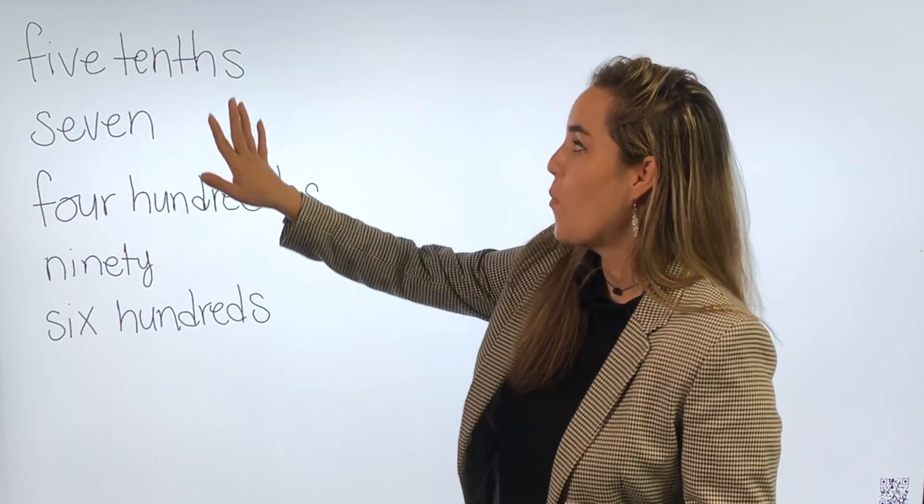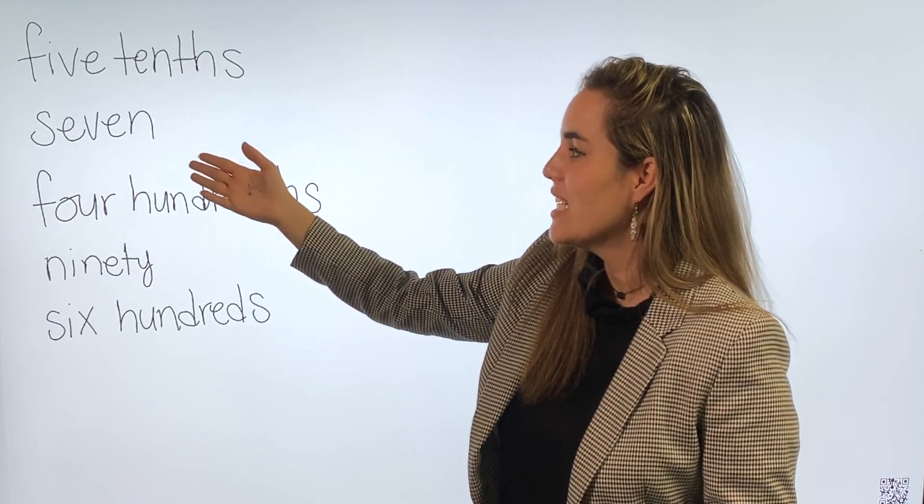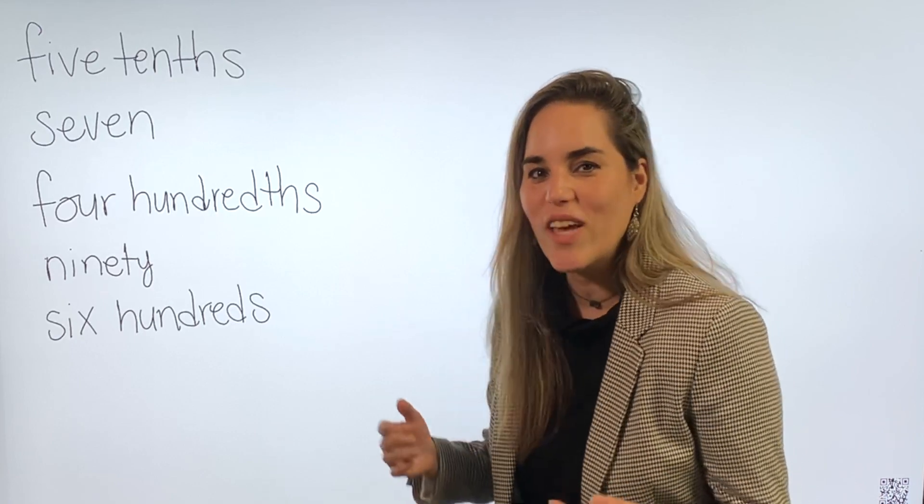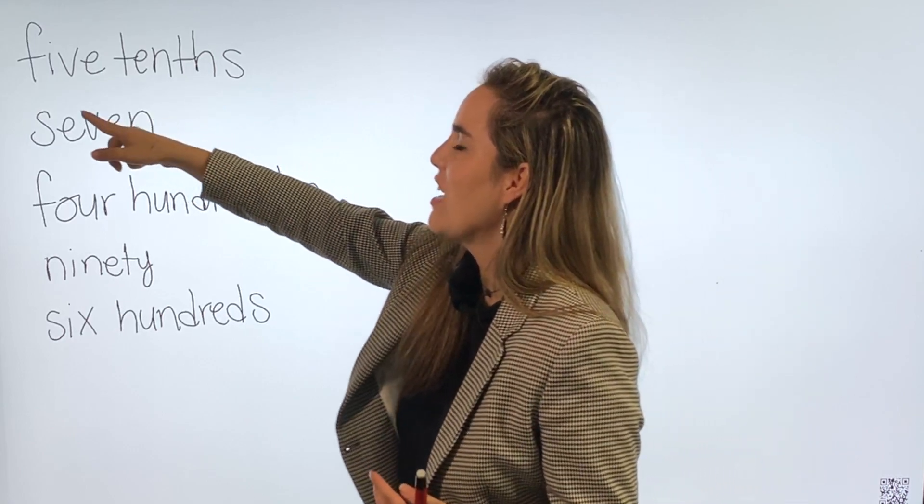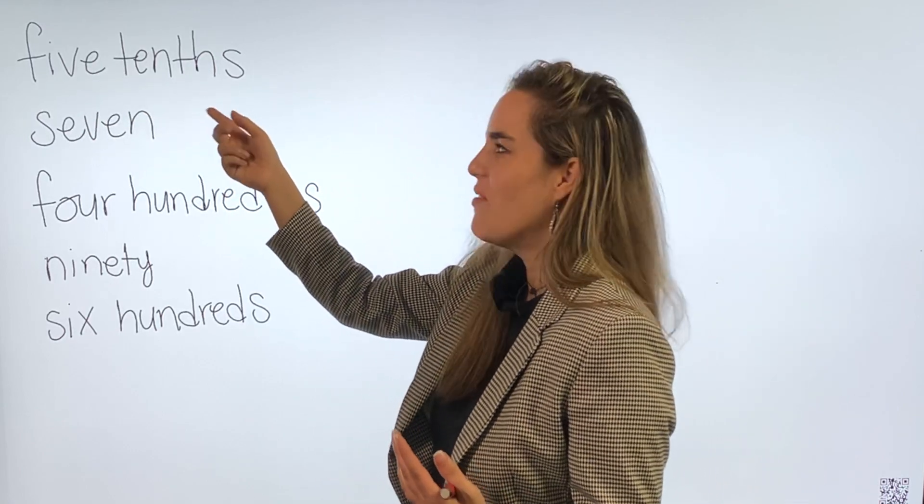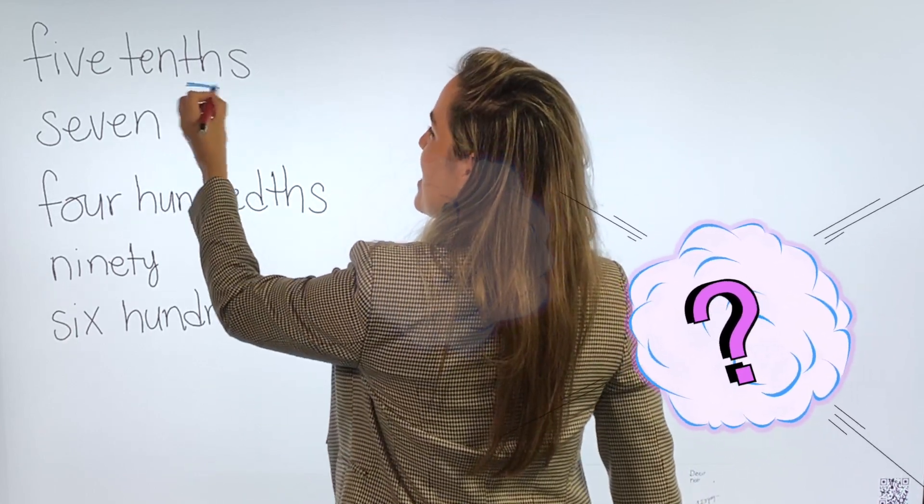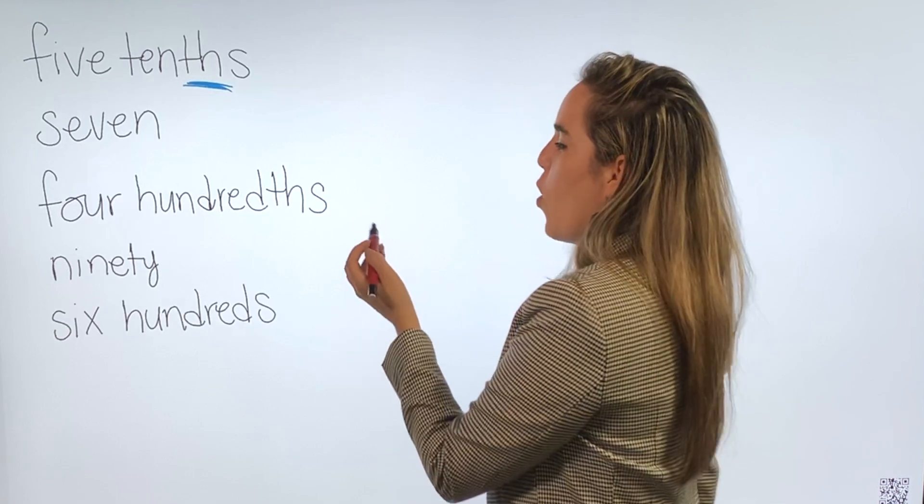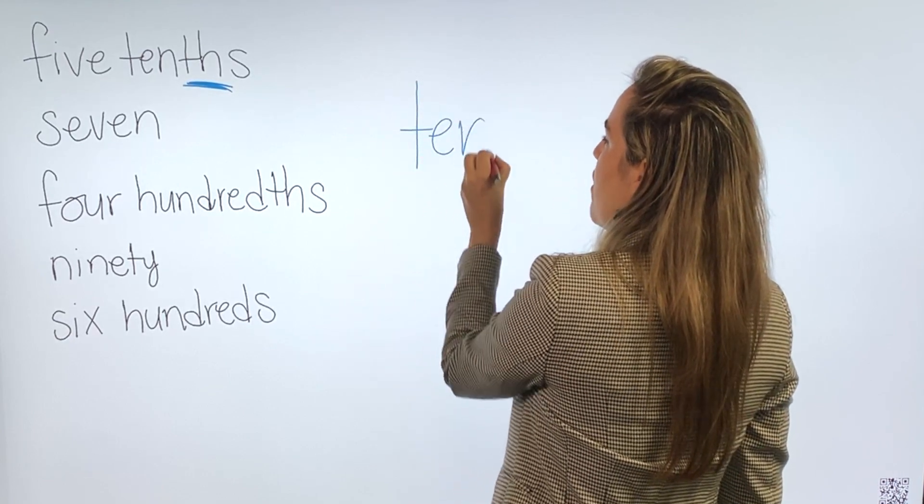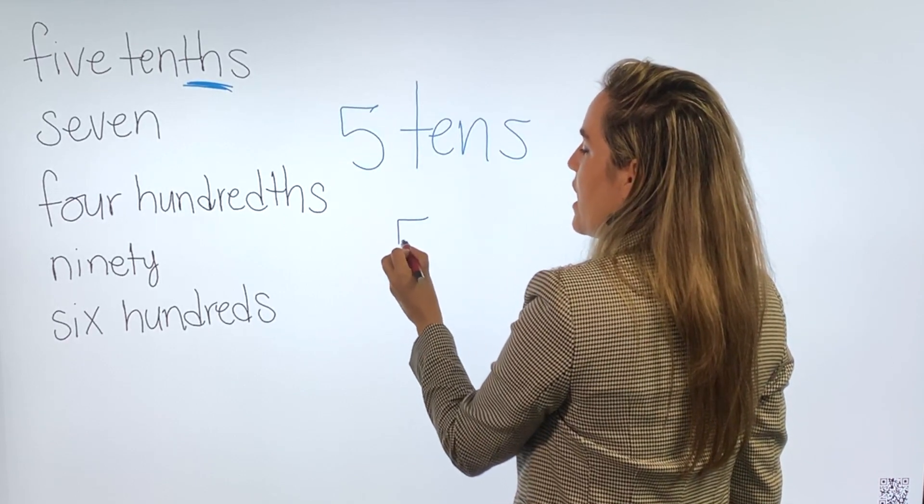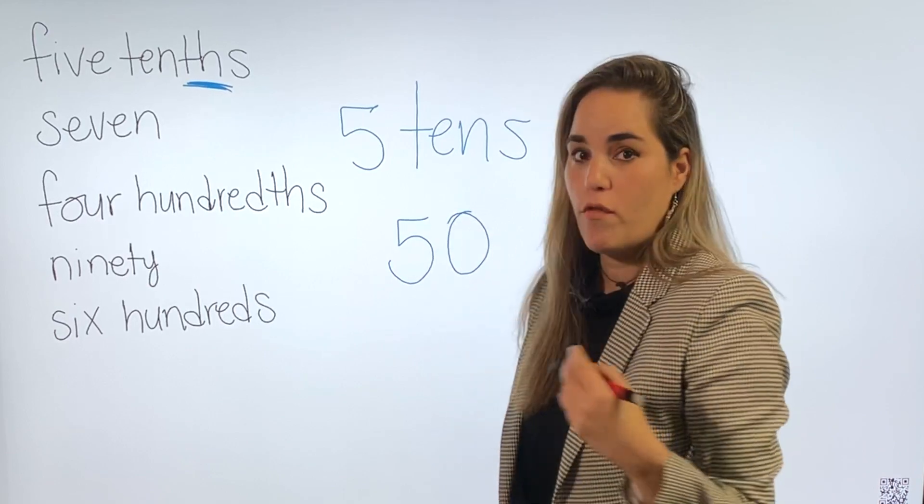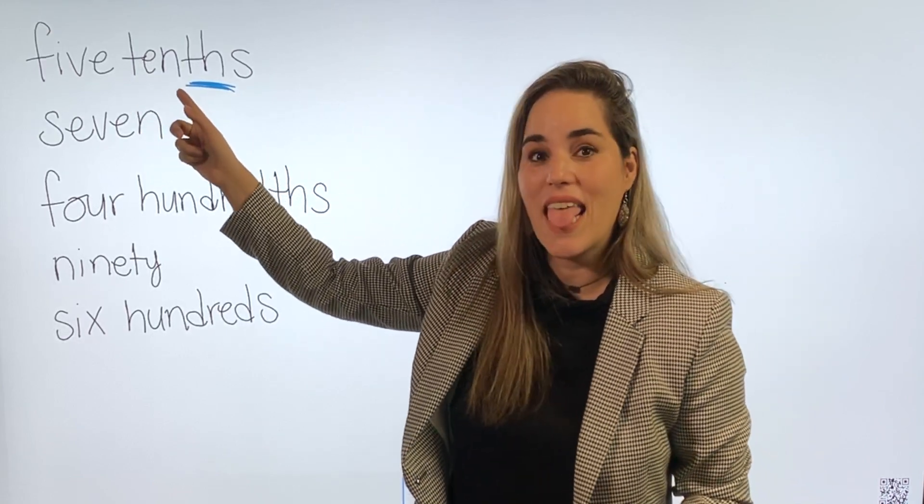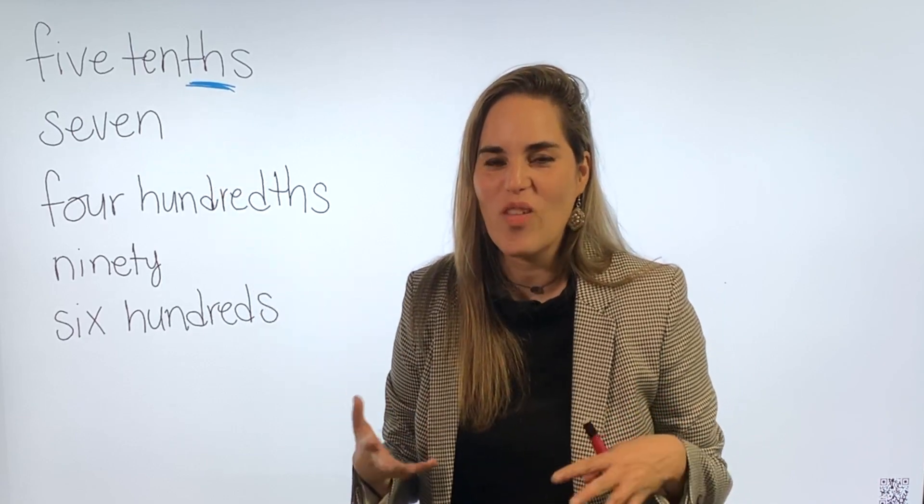In this video we're going to create a number using five tenths, seven, four hundredths, ninety and six hundreds. So the first thing you need to know is analyze the word. As you can see here five tenths. Do you notice anything about this word? If you say that it has a th you're on the right track. We have never seen tens with a th. We usually have seen the word tens. For example five tenths is equivalent or equal to the number 50. In this case we see five tenths and the th let us know that those are decimal numbers.